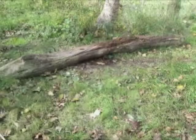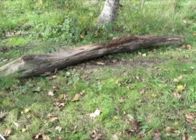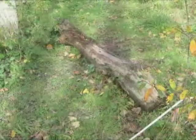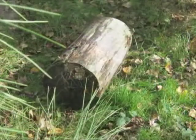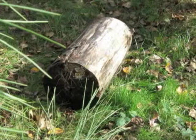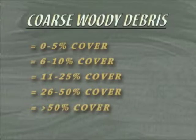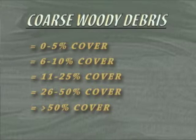Coarse woody debris is another site characteristic. Coarse woody debris is defined as dead wood that is at least five inches in diameter, or it could be a stump as well. On our particular site we do have some coarse woody debris and it would probably fall under the zero to five percent category.